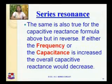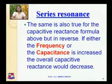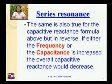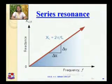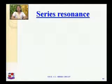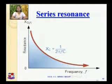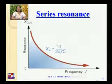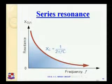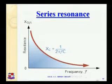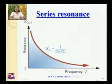The same thing is also true for capacitive reactance but in reverse, because XC equals 1 upon 2πfC. So if either the frequency or capacitance is increased, the overall capacitive reactance would decrease, as it is inversely proportional to frequency. On the graph, x-axis is frequency and y-axis is reactance. When the value of frequency is less, the value of XC is high, and when frequency is high, the value of reactance is very less. So XC is inversely proportional to frequency.